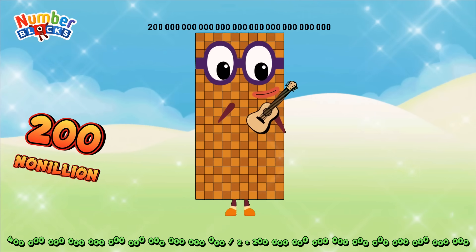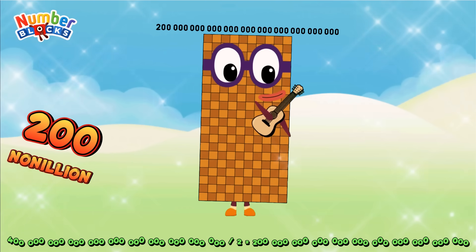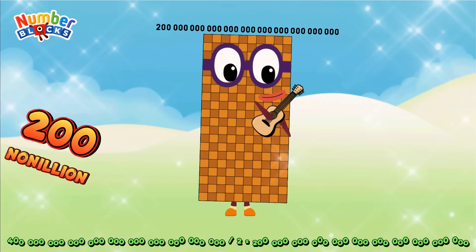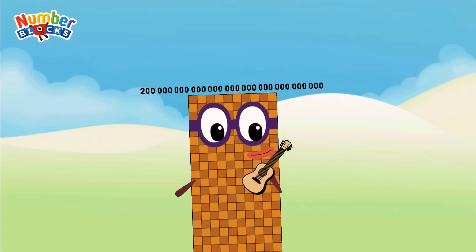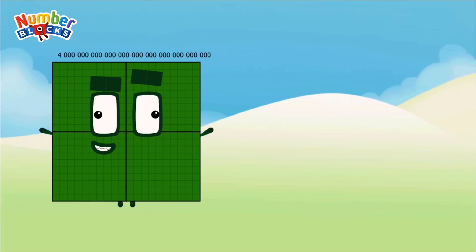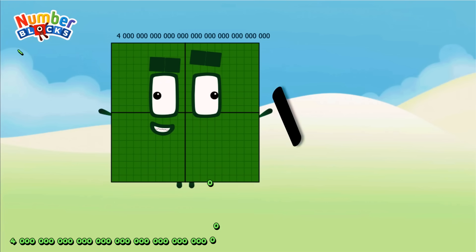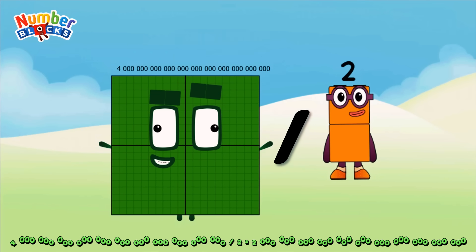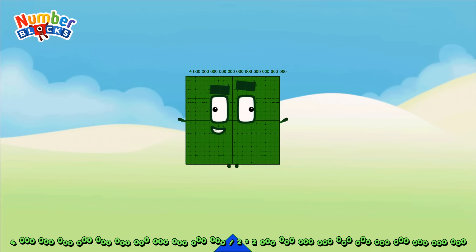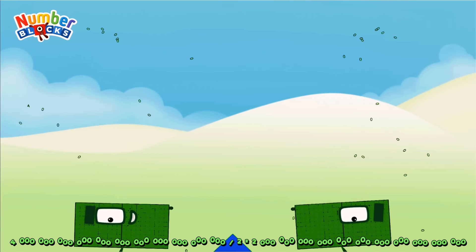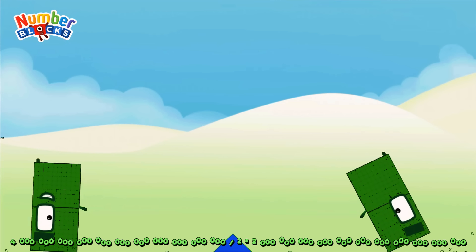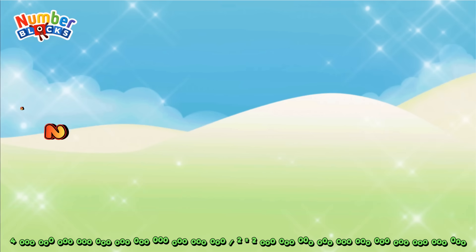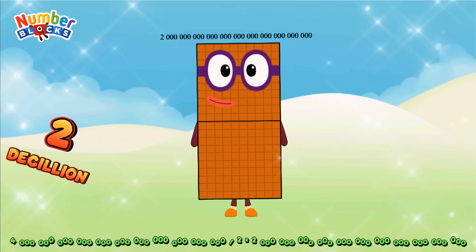Four decillion divided by two equals four decillion.